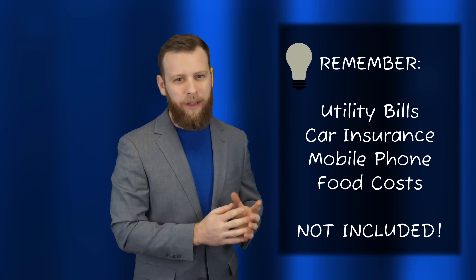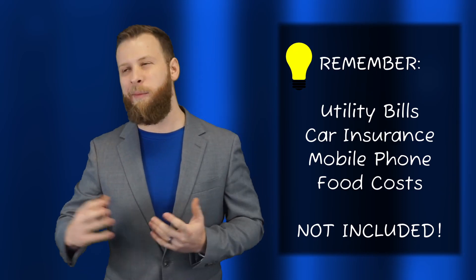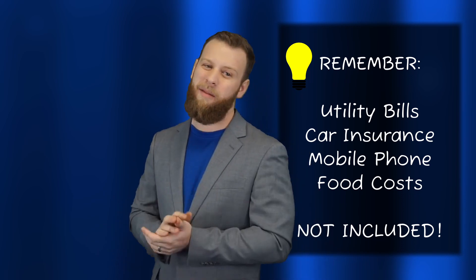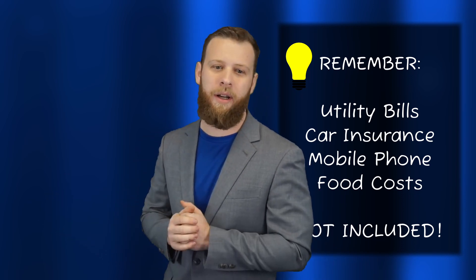Now, there are some rules to remember to ensure that we're calculating this properly. First, items like utility bills, car insurance, cell phone bills, borrower's monthly beer budget, those are not going to be included in either of those ratios.